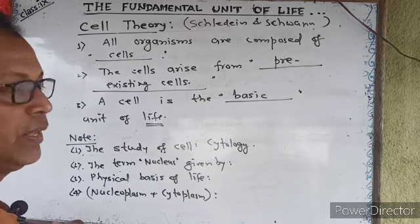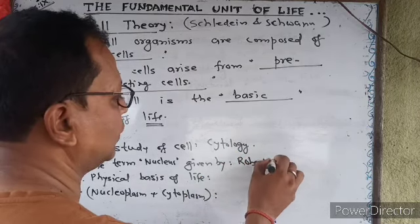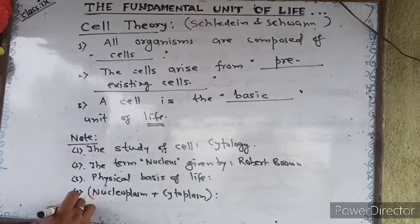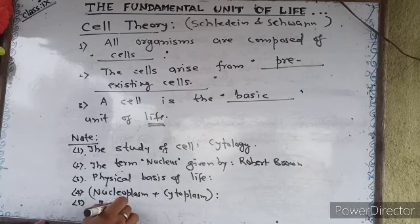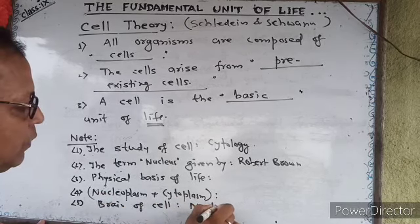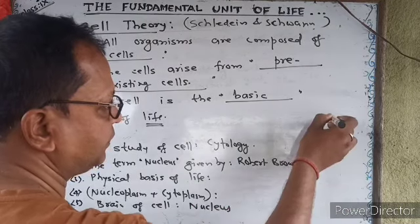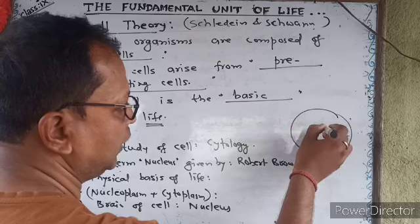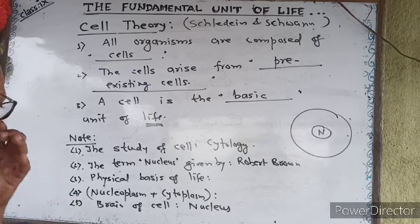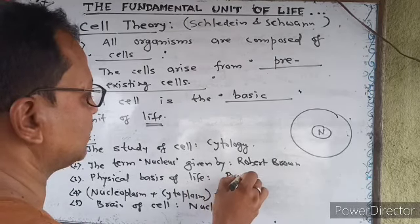The term 'nucleus' was given by Robert Brown. The nucleus is called the brain of the cell. The physical basis of life is called protoplasm.